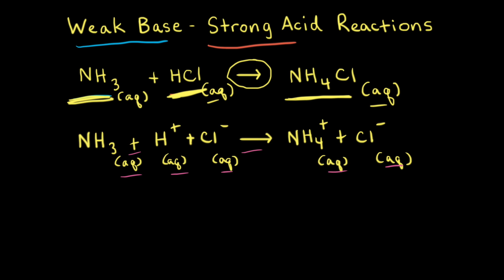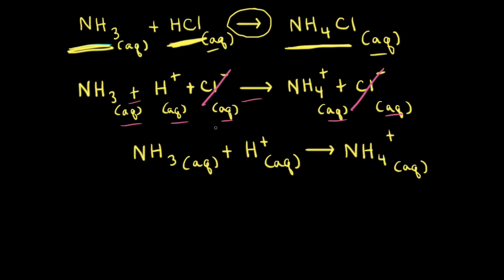To find the net ionic equation, we first need to identify the spectator ions — the ions that do not take part in the chemical reaction. Since there's a chloride anion on both the left and right sides, the chloride anion is the spectator ion. Once we remove it, we're left with the net ionic equation: aqueous NH3 + H+ → NH4+.